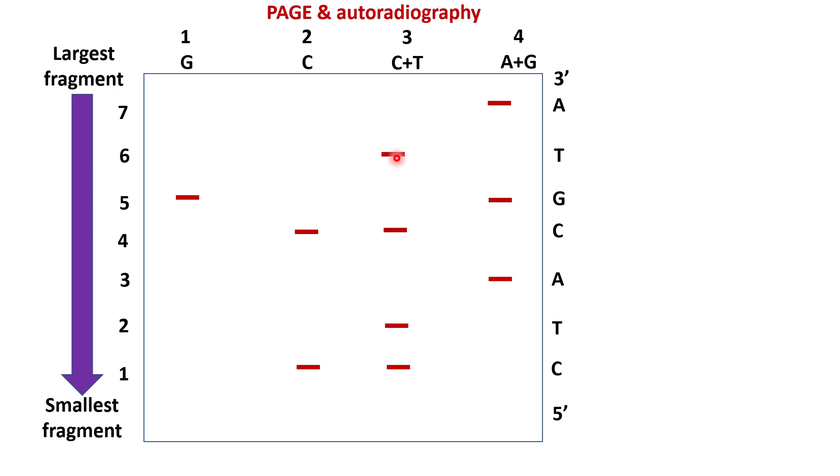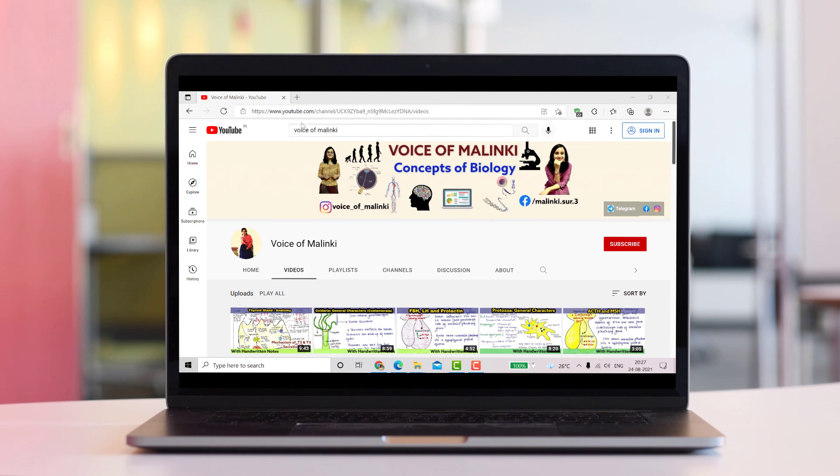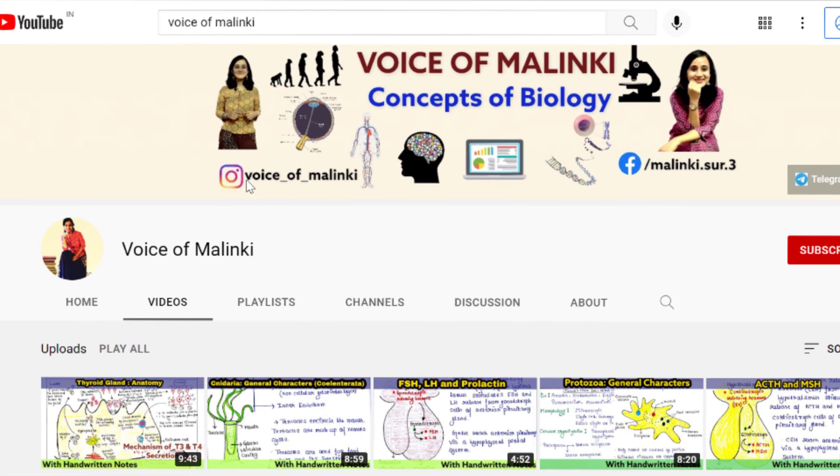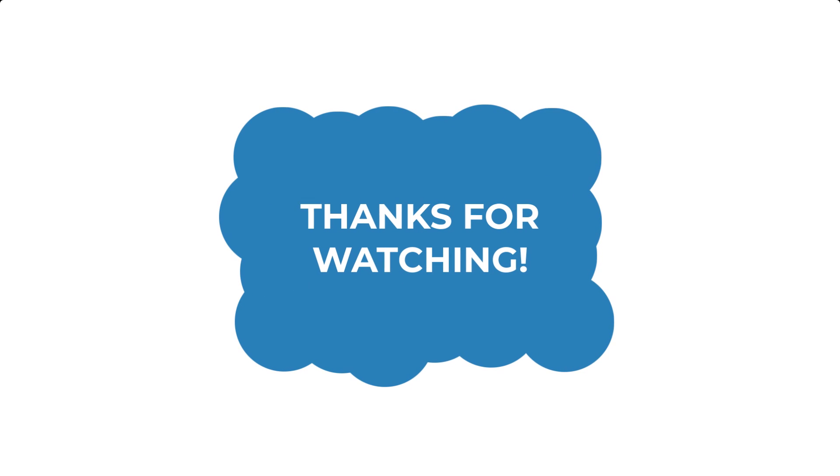Next lane represents a single band in C plus T, so the nucleotide is T since no band is present in tube 2 (C). The following lane represents a single band in A plus G, so the nucleotide is A since no band is present in tube 1 (G). Therefore, the DNA sequence would be 5-prime C-T-A-C-G-T-A 3-prime. Thank you for watching.